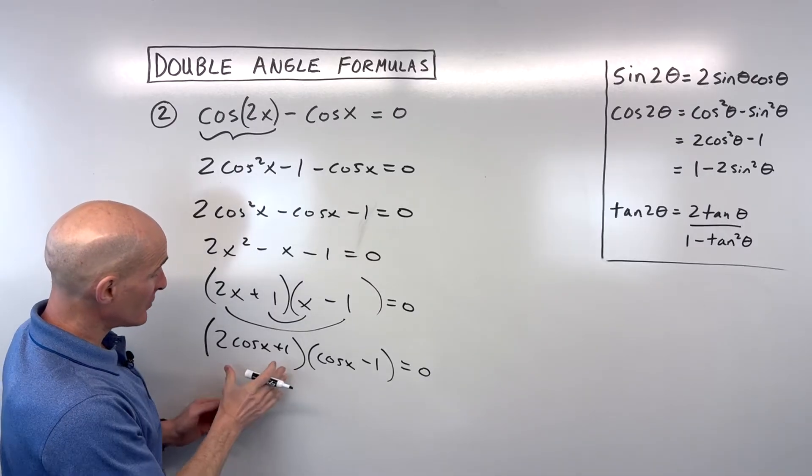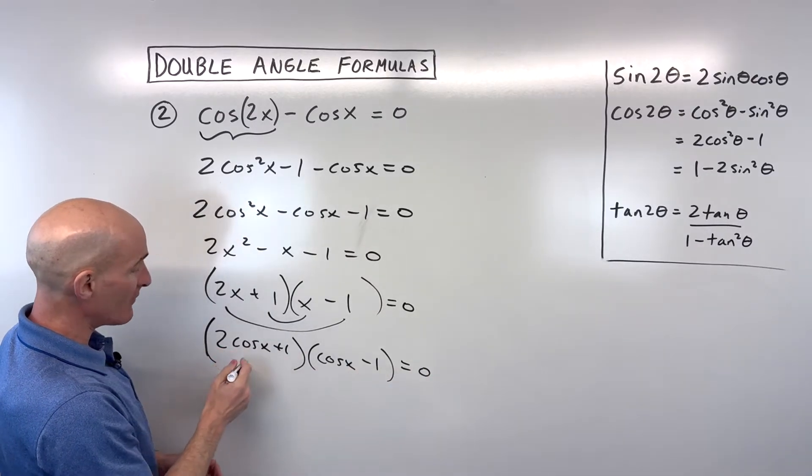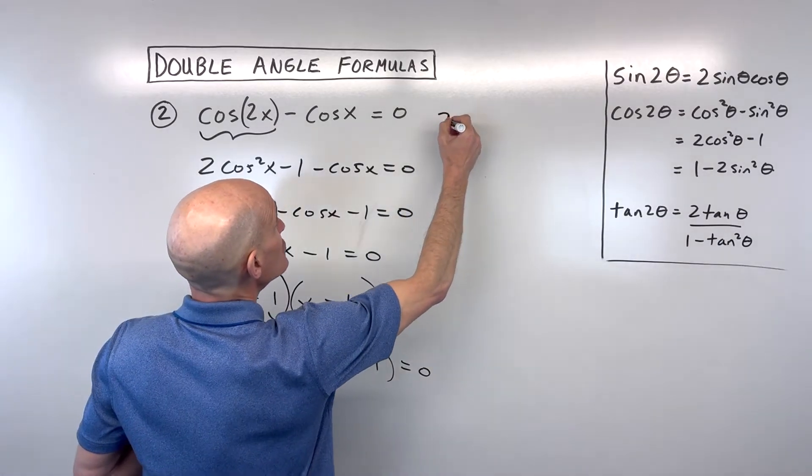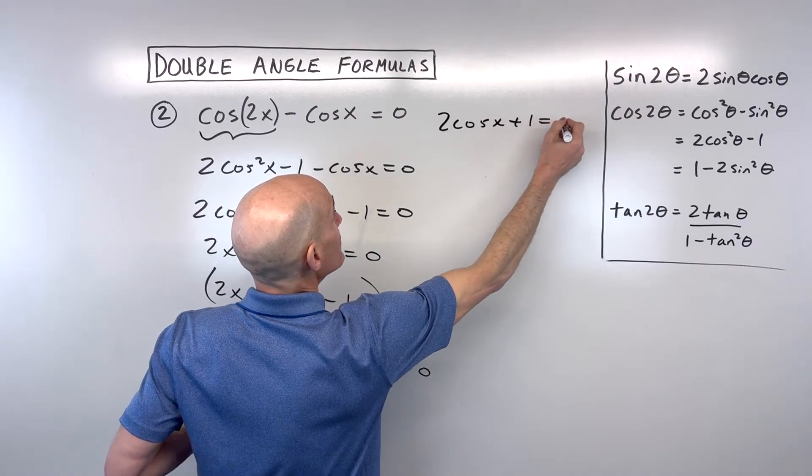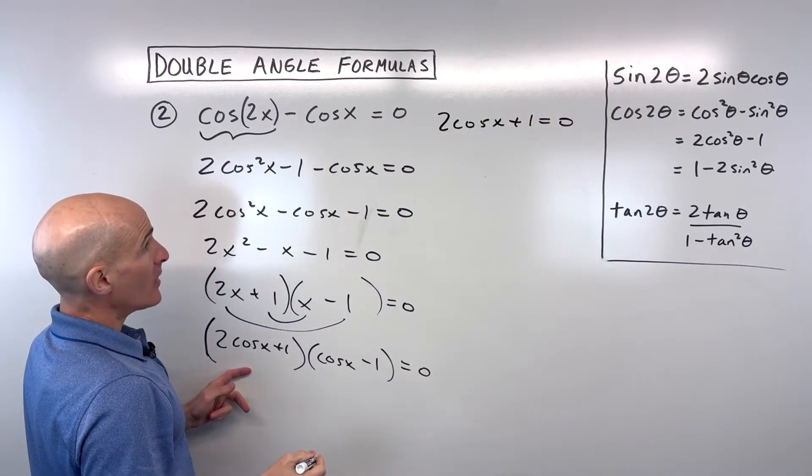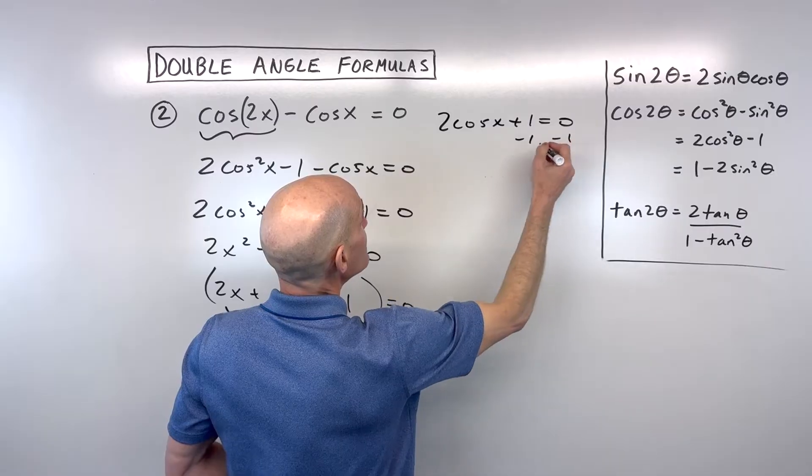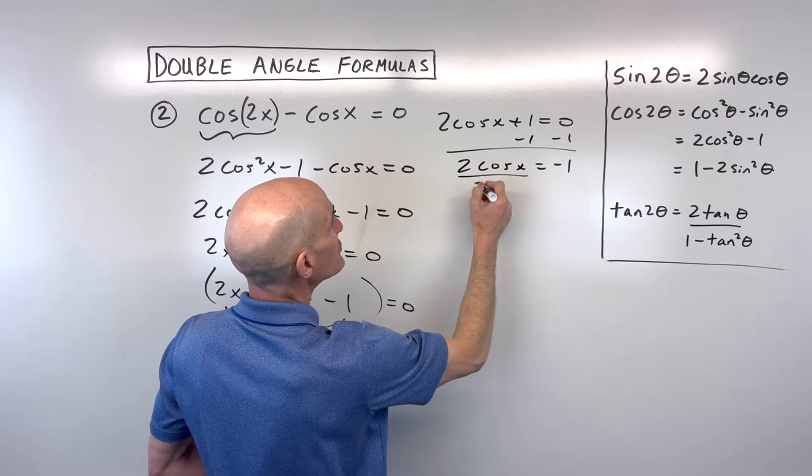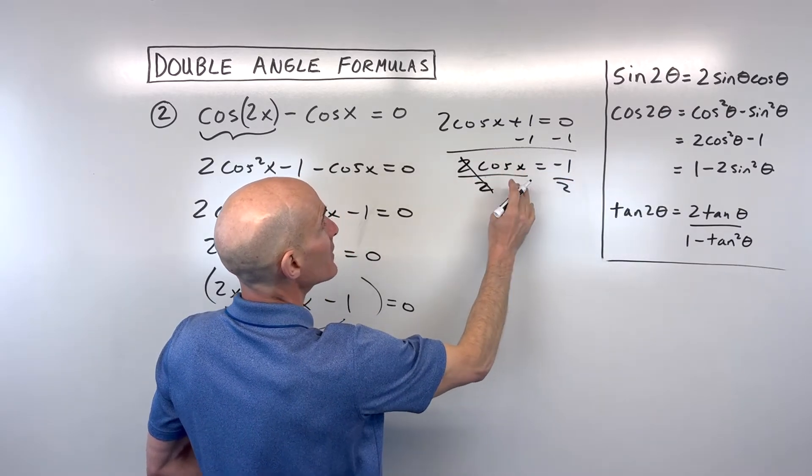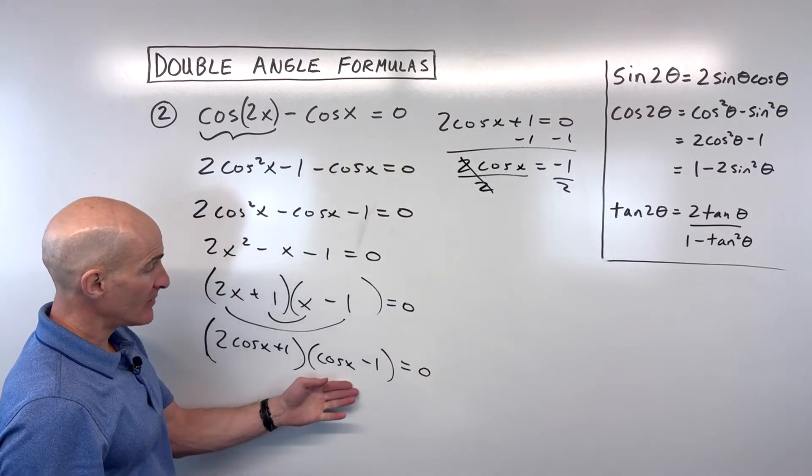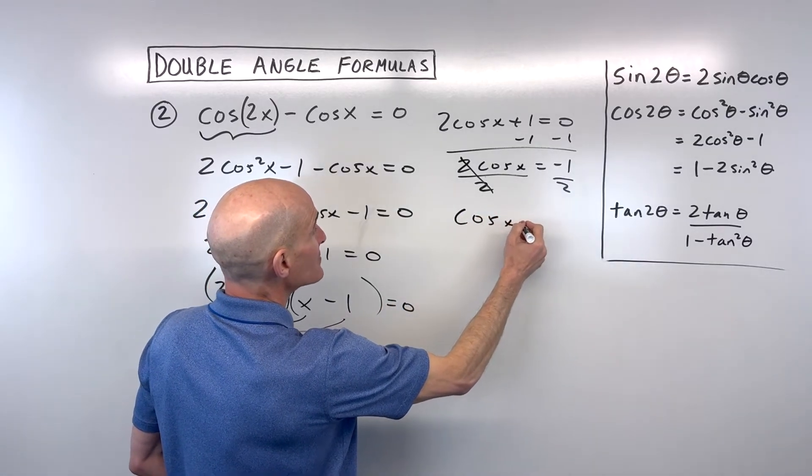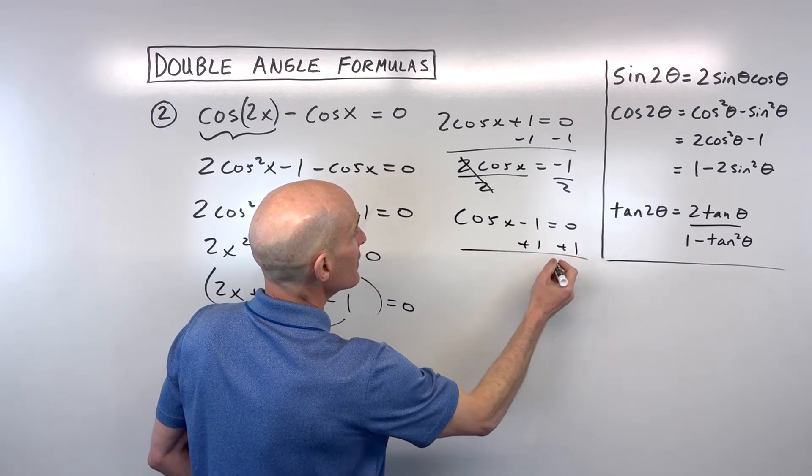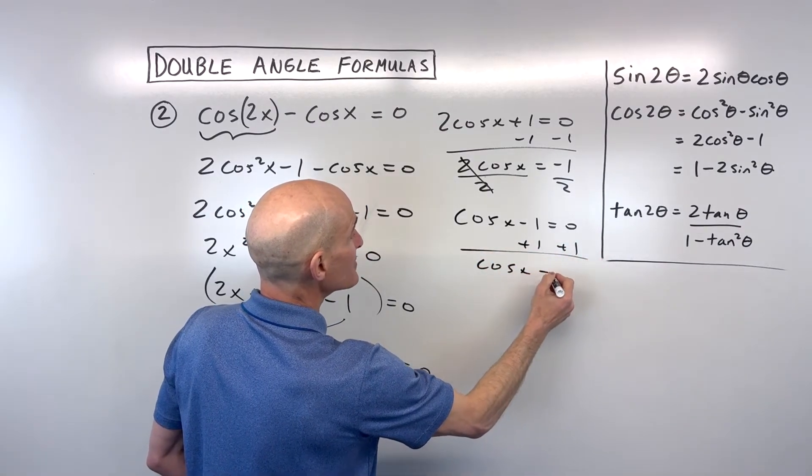Now that we have it factored, let's set each factor equal to zero and solve. That's our zero product property. So if we take 2cos x + 1 = 0, let's subtract 1 from both sides. So 2cos x = -1, divide both sides by 2, we get cos x = -1/2. And this one, if we set cos x - 1 = 0 and add 1 to both sides, we get cos x = 1.